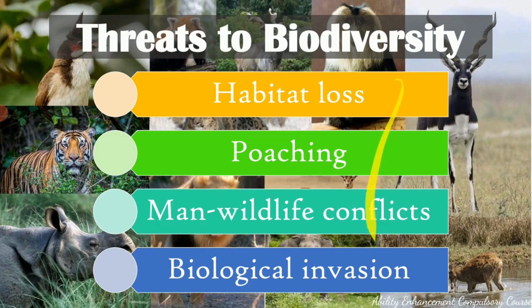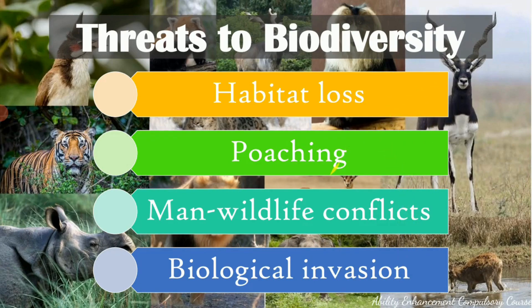These are the four major reasons for threat to biodiversity: the loss of habitat, illegal and rampant poaching, man-wildlife conflicts, and biological invasion by other species. Due to this, there has been a lot of pressure on biodiversity in many parts of the world. The number of endangered species has gone up, and some species have become extinct or at least extinct from the wild.